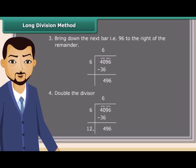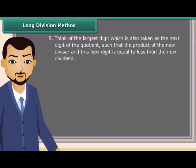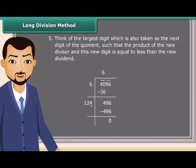Now double the divisor. Next, think of the largest digit which is also taken as the next digit of the quotient such that the product of the new divisor and this new digit is equal to less than the new dividend. Here we have 124 multiplied by 4 equal to 496. Since the remainder is 0, so the square root of 4096 is 64.